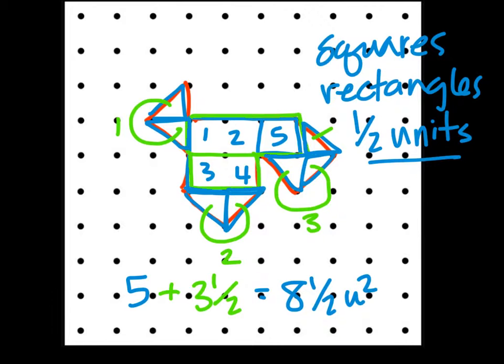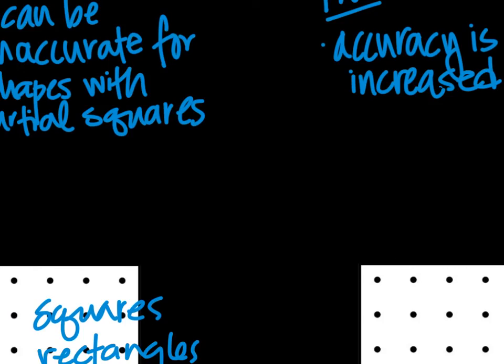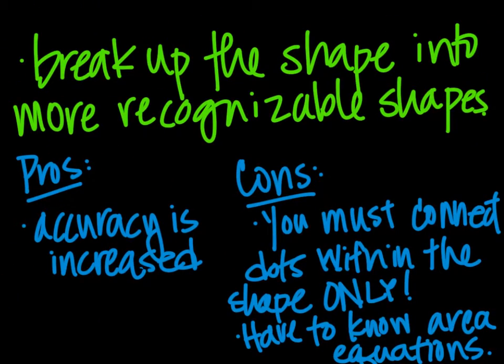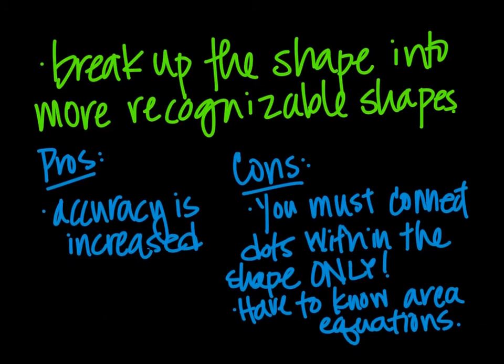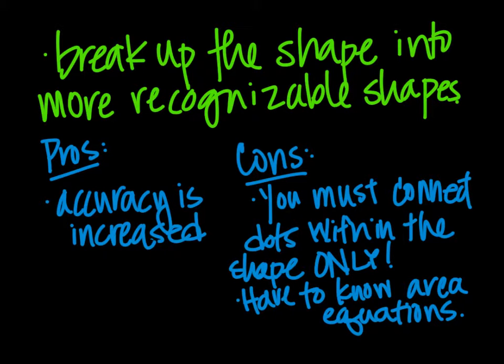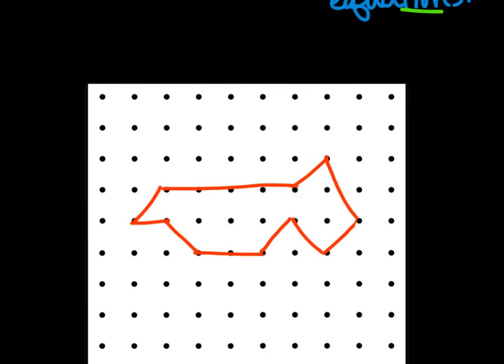Let's go on and look at another method. Here's another method we can look at: we can break up the shape into more recognizable shapes. It's similar to what we just did, but it also takes into account that you can make more complex triangles out of it. Our accuracy can be increased, but we must connect the dots within the shape only. We have to know some area equations.